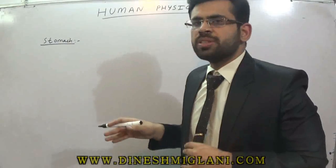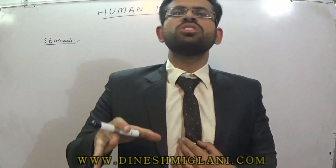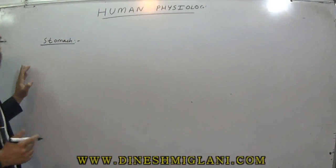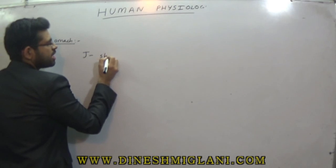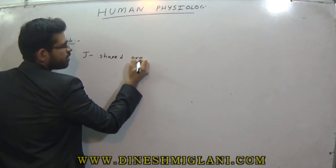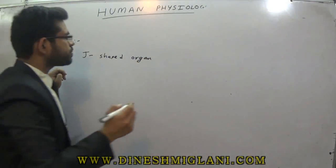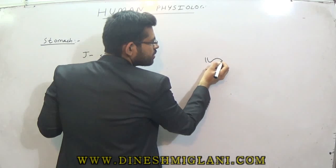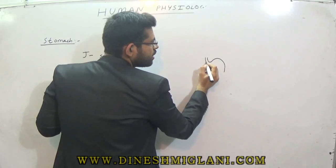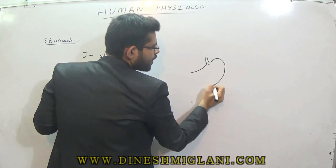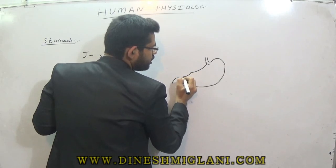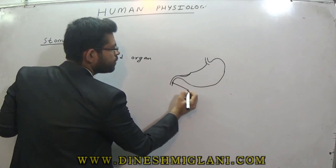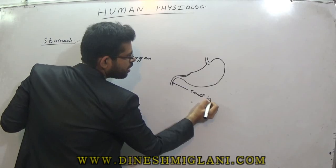So the stomach secretes enzymes to digest the food. What is the shape of the stomach? The stomach is a J-shaped organ. It is a continuation from the esophagus. It starts with your esophagus and ends in your small intestine. Here it is connected to the small intestine.